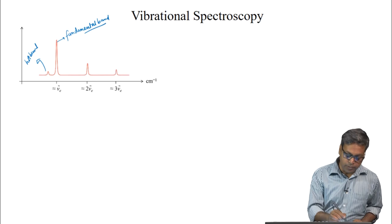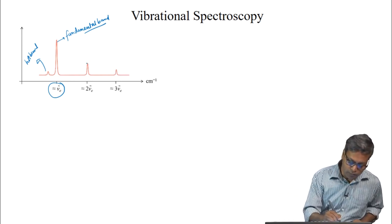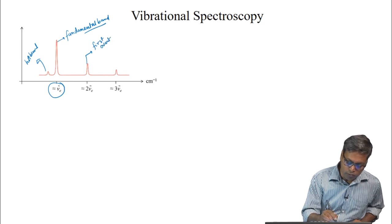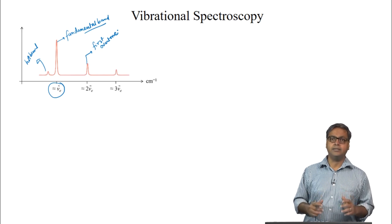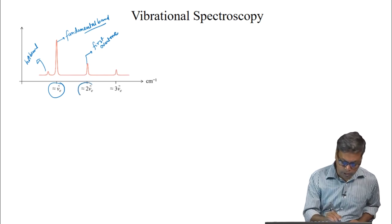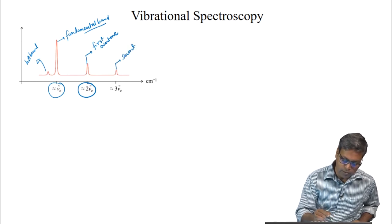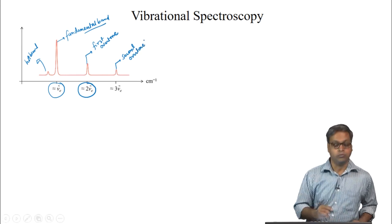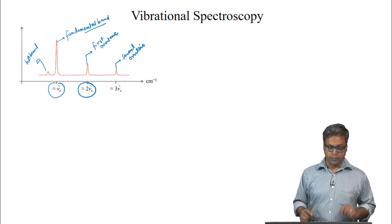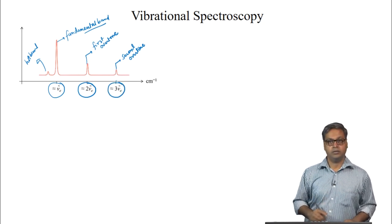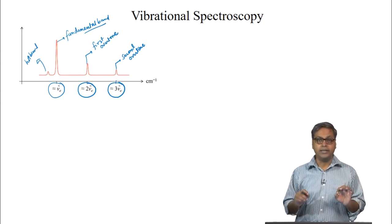The fundamental band approximately occurs at nu_bar_e. The first overtone occurs at a frequency which is approximately twice that of the fundamental, or approximately 2*nu_bar_e. The second overtone occurs at a frequency that is approximately 3 times that of the fundamental, or 3*nu_bar_e. In reality, the first and the second overtone are slightly less than twice and thrice the fundamental.